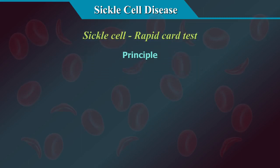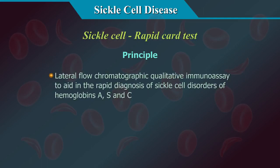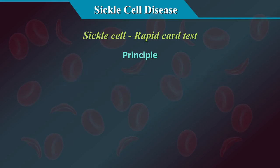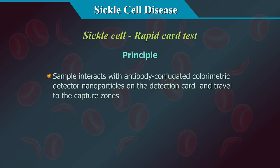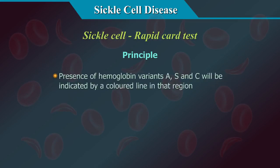The sickle scan rapid card test is a lateral flow chromatographic qualitative immunoassay to aid in the rapid diagnosis of sickle cell disorders of haemoglobins A, S, and C. A small amount of blood is placed into the buffer-loaded pre-treatment module to release haemoglobin by lysing the erythrocytes. The sample interacts with antibody-conjugated colorimetric detector nanoparticles on the detection card and travels to the capture zones. The presence of haemoglobin variants A, S, and C will be indicated by a coloured line in that region.